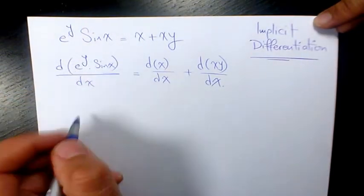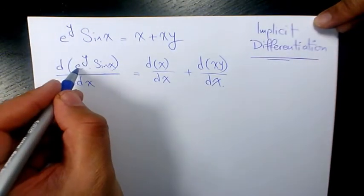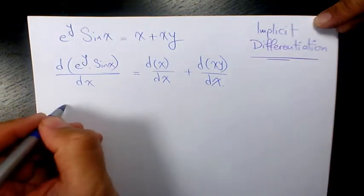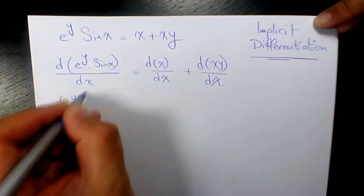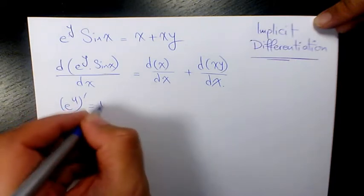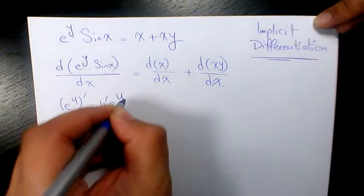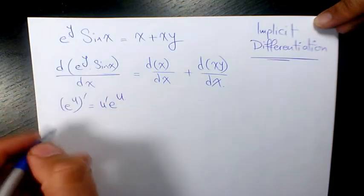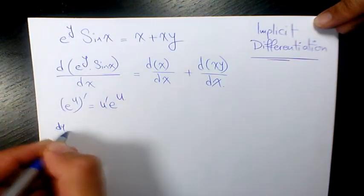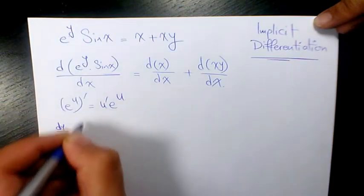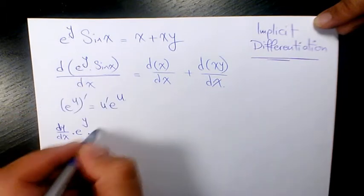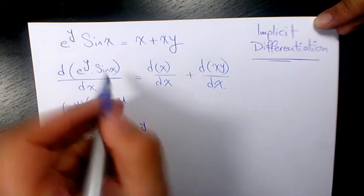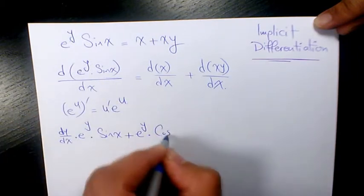We need to use the product rule. The derivative of e to the power of u, where u is a function of x, is u prime times e to the power of u. So the derivative of e to the power of y is dy/dx times e to the power of y, times sine x, plus e to the power of y times the derivative of sine x, which is cosine x.